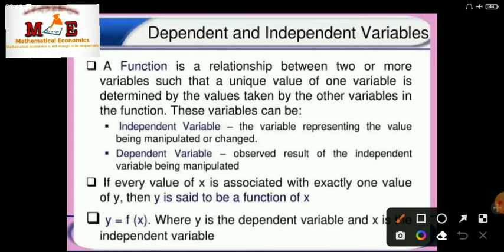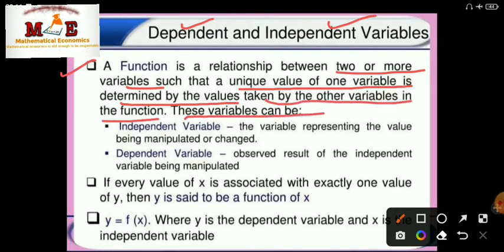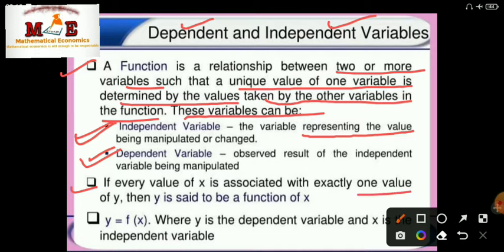A function generally has two types of variables: dependent variable and independent variable. A function is a relationship between two or more variables such that a unique value of one variable is determined by the values taken by the other variables. The independent variable is the variable representing the value being manipulated or changed, and the dependent variable is observed as a result of the independent variable being manipulated. For example, if every value of x is associated with exactly one value of y, then y = f(x), where y is the dependent variable and x is the independent variable.